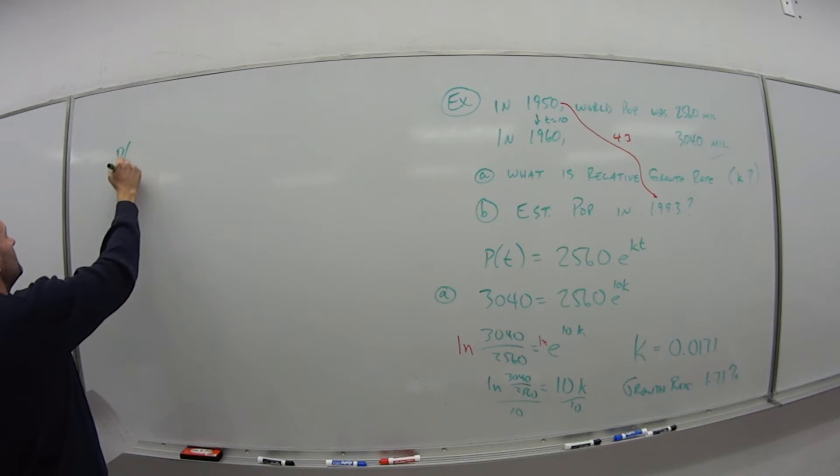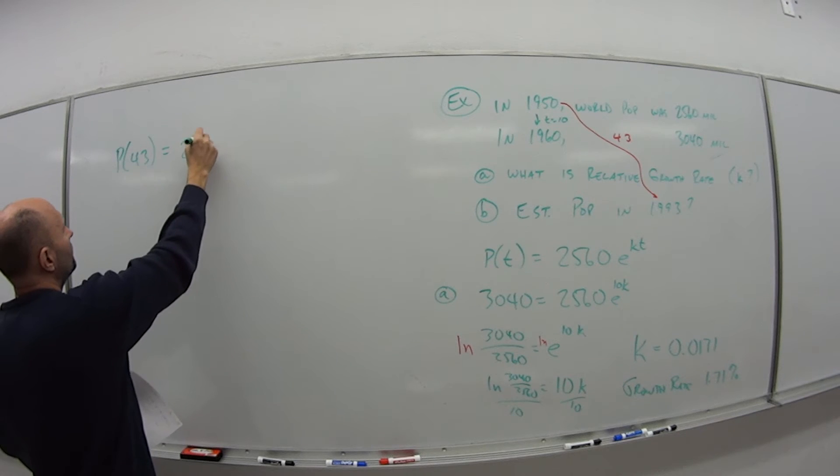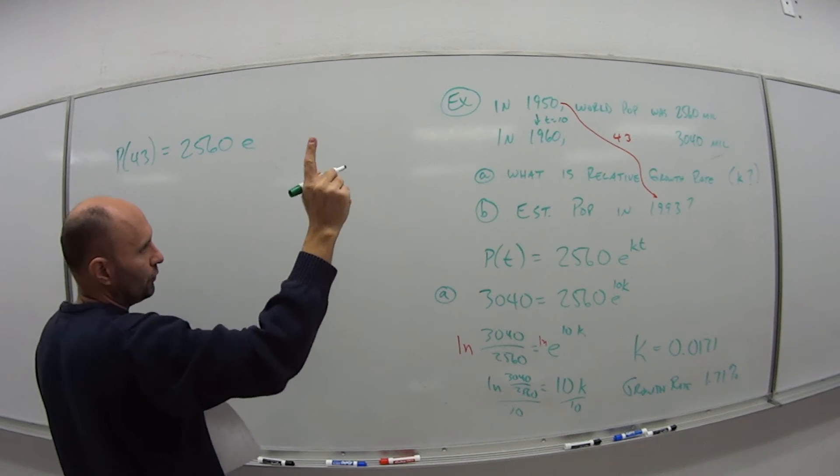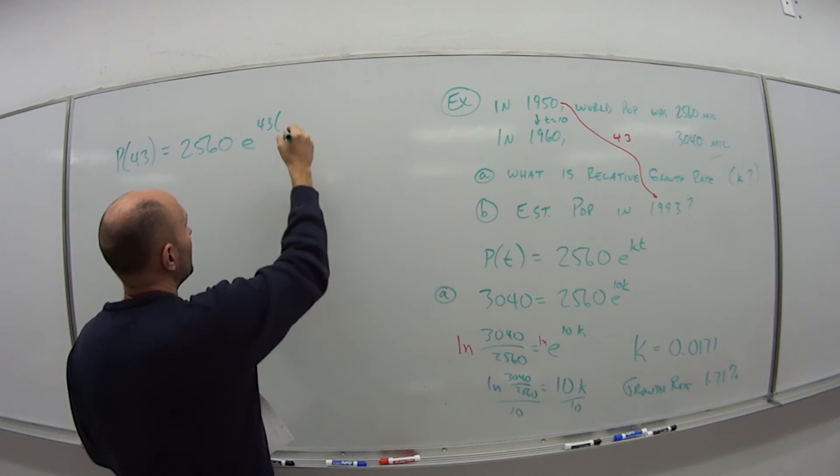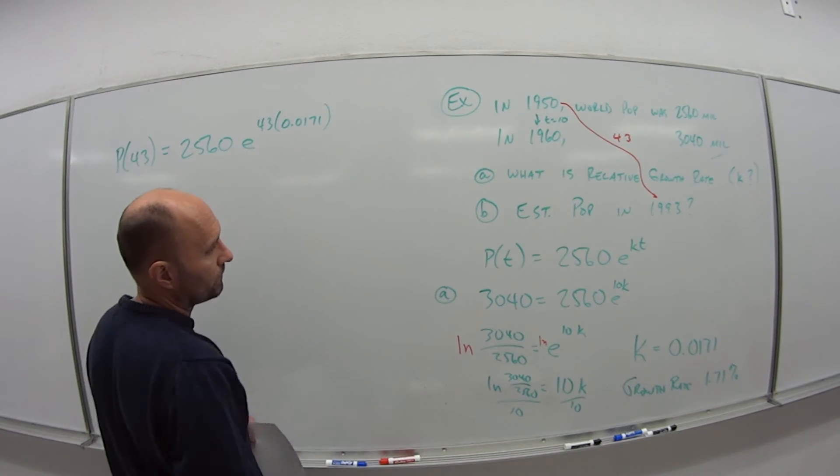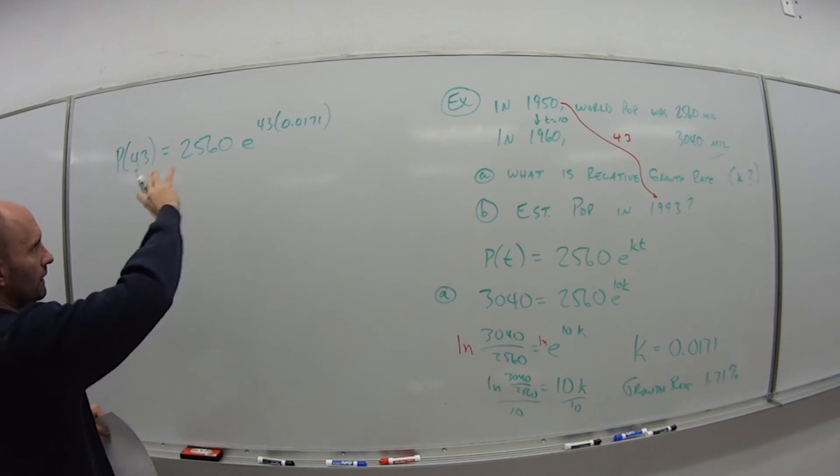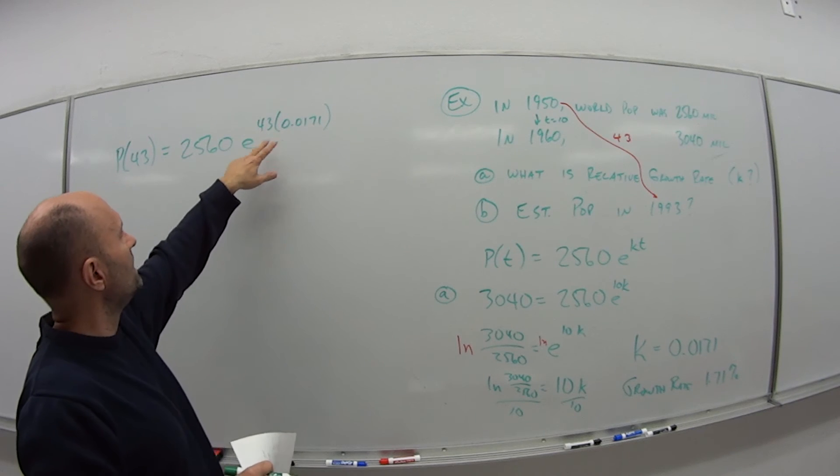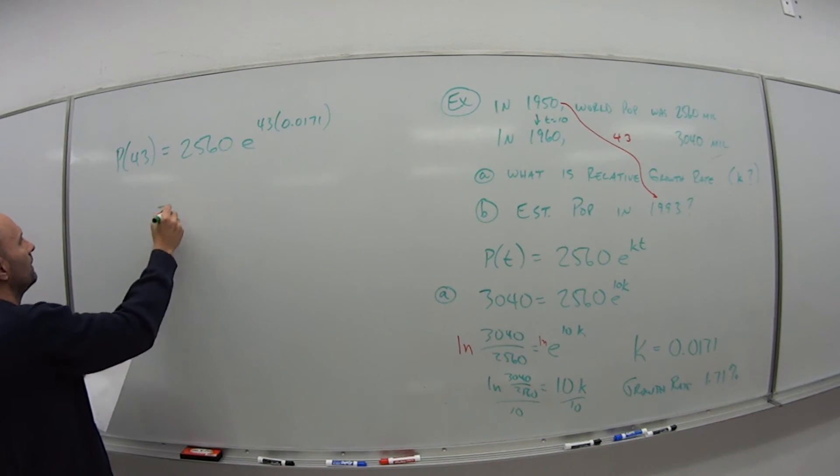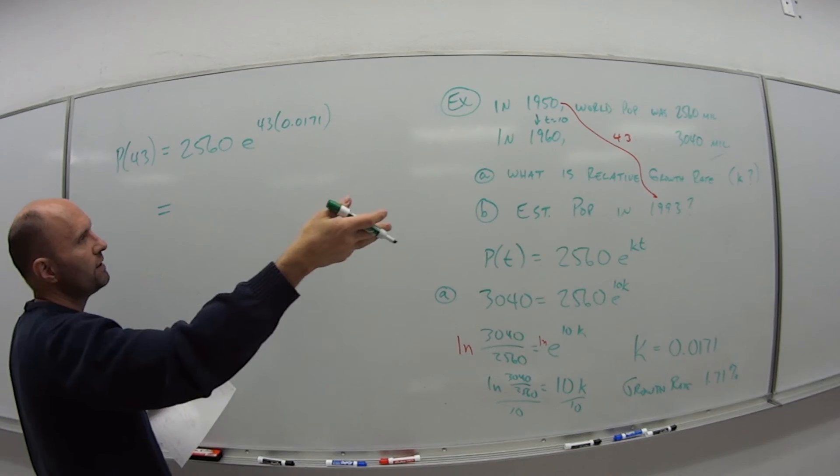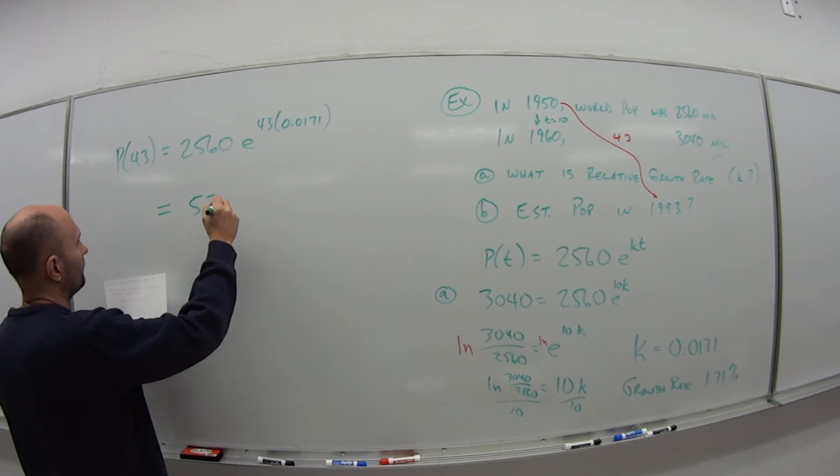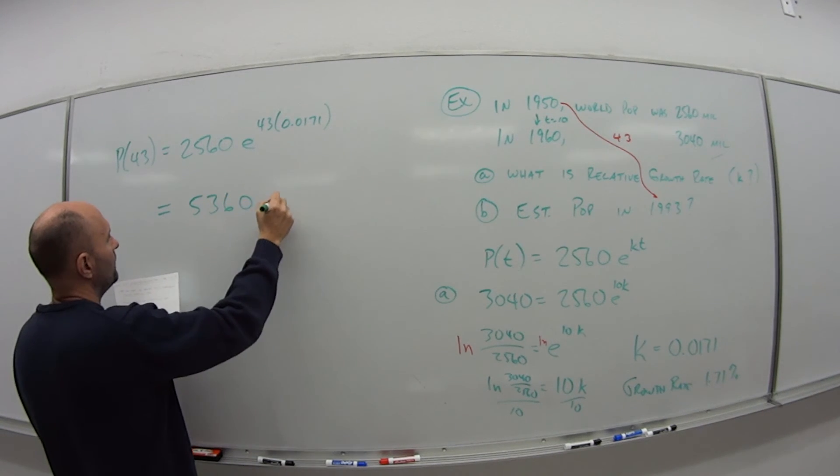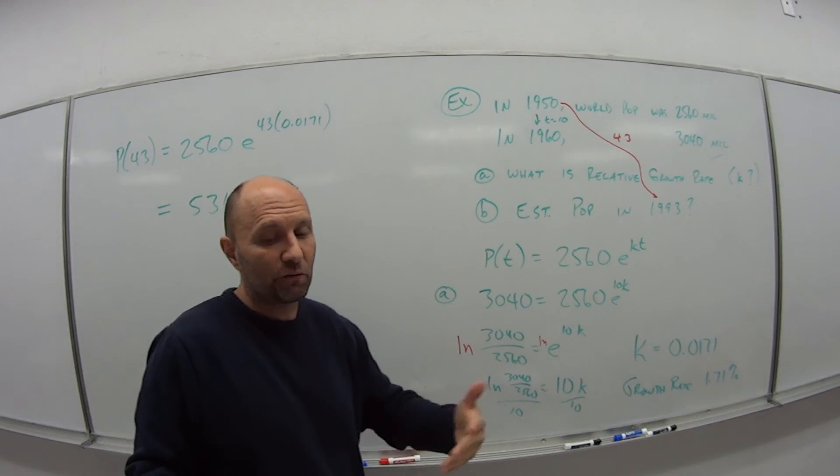So I can just say that p, the population in 43 years, is going to be 2560 e to the t, which is 43 times my value of k, 0.0171. Get out your calculator, calculate this. E to that power times 2560 says that the population in 43 years, the population in 1993 would be roughly 5,360 million people, or 5.36 billion people.